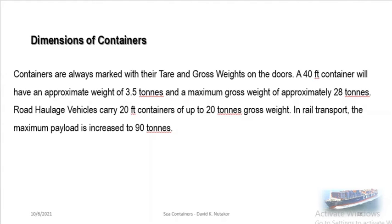Containers are marked, not merely numbered. Apart from the main 11 alphanumeric characters we concentrate on, they are also marked with dimensions on the doors. An approximate weight is given in tons — a maximum gross weight of approximately 28 tons. Road vehicles constructed to carry containers must also conform to specifications. When you hire a truck and weigh it empty before collecting a container, that is the tare weight. Gross weight and net weight in shipping involve the container's empty weight plus its contents.